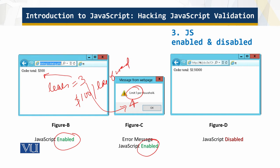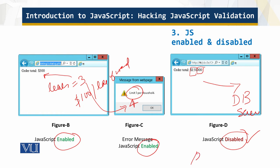Now, what happens is that somebody disables the JavaScript and then enters a very large number of weeds. You can see there is a big number for the leaves, and this will go directly to the database server and create all sorts of problems. This happened because the person disabled the JavaScript — there was no pre-validation — and the data went directly through.